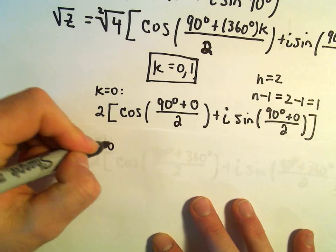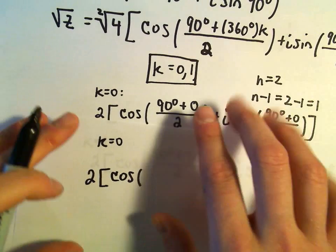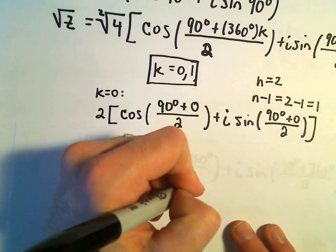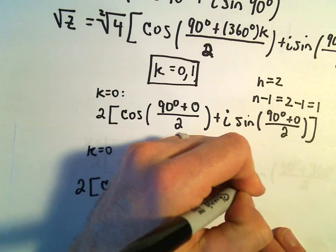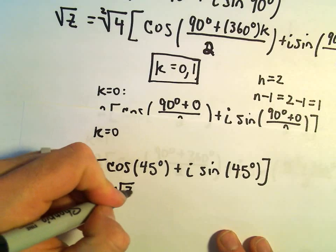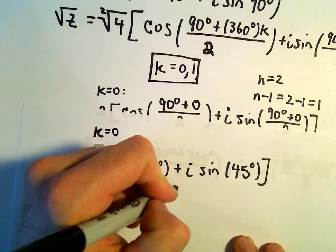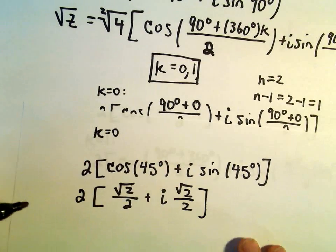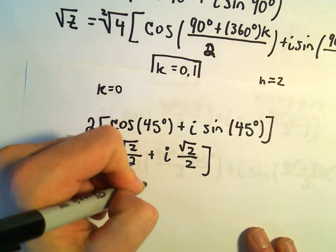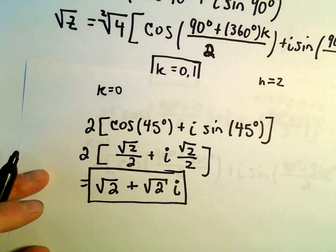For our k equals 0 case, we get 2 times cosine of 45 degrees plus i sine of 45 degrees — since 90 degrees over 2 gives us 45 degrees. Cosine of 45 degrees is √2/2, and sine of 45 degrees is also √2/2. Distributing the 2, the 2s cancel, and we're left with √2 + √2·i. That's going to be one of our roots.